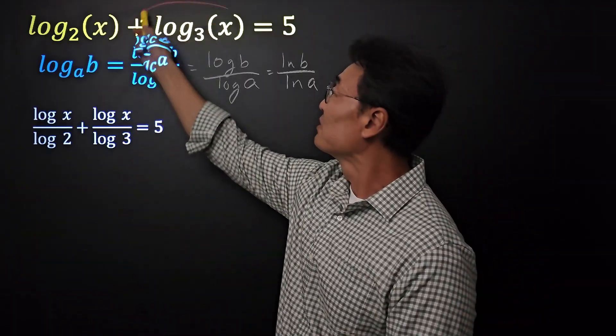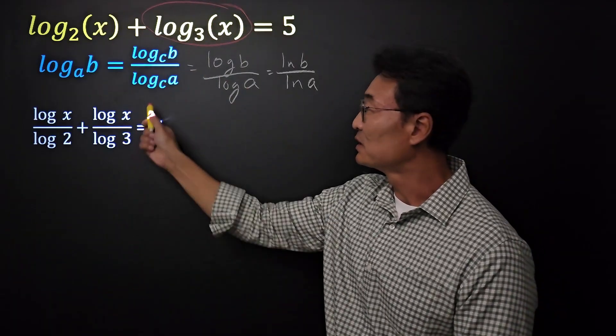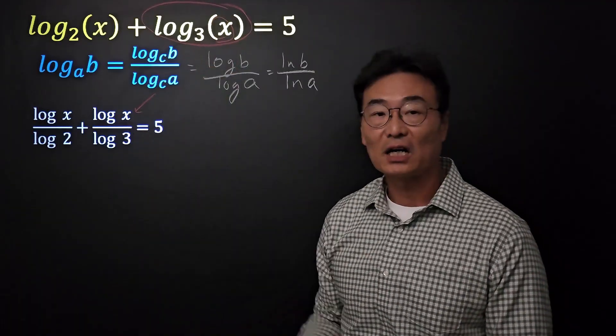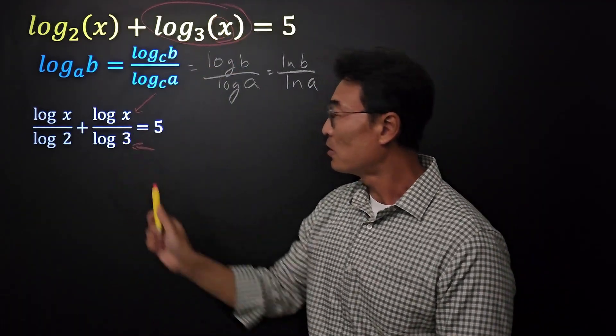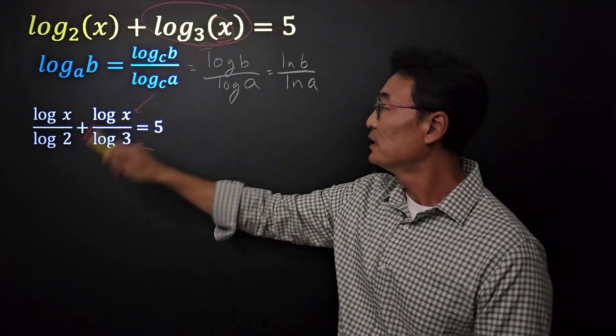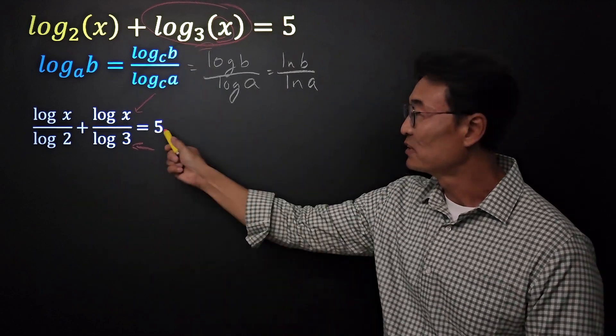Also, when we see that log of base 3 of x, I changed it into log of x. Notice the argument goes on the top. Log of 3, or the base, goes on the bottom. And of course, equals 5.